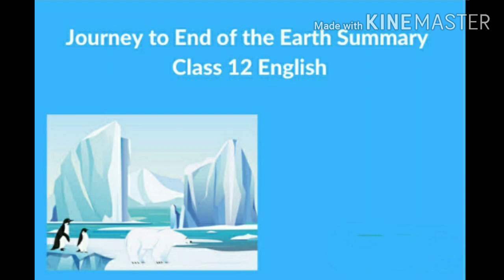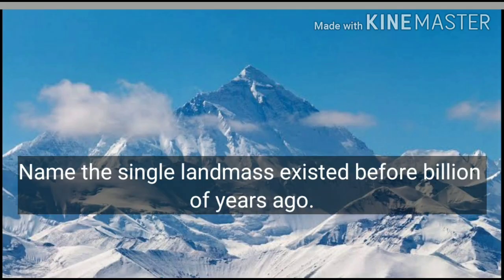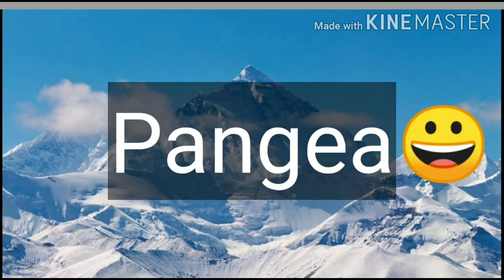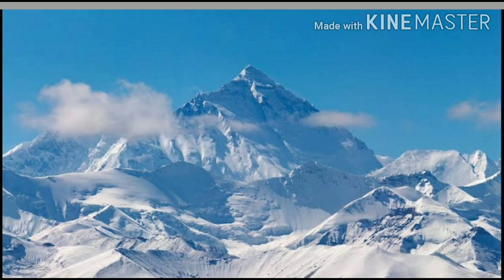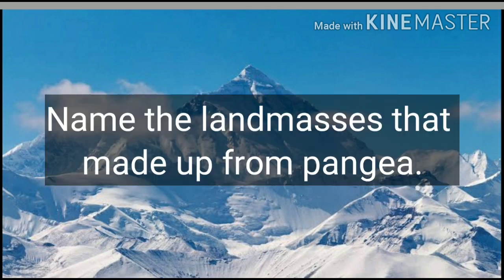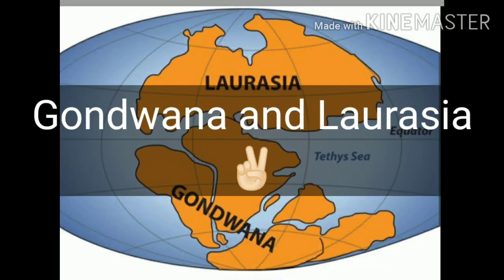Name the single landmass that existed billions of years ago — Pangea. In which era did Pangea break up? 200 million years ago. Name the land masses that were formed from Pangea: two land masses, and those were Gondwana and Laurasia.